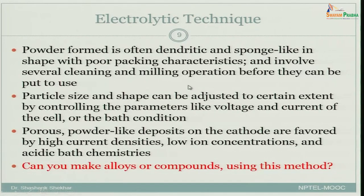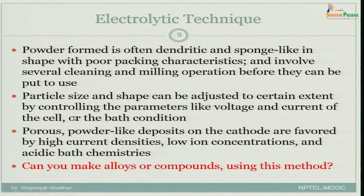The powder formed is often dendritic and sponge-like in shape with poor packing characteristics. The agglomerate is not very tightly packed — it is very porous, and you need to do a lot of steps like cleaning and milling before the powder is usable for compaction purposes. Particle size and shape can be adjusted to a certain extent by controlling voltage and current.